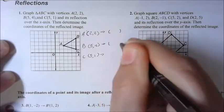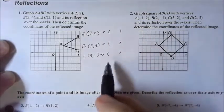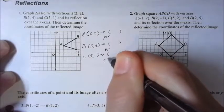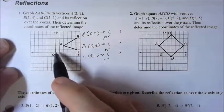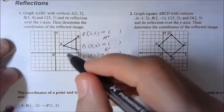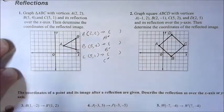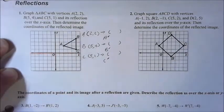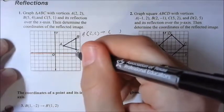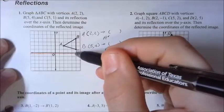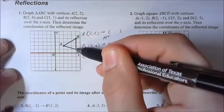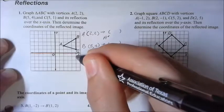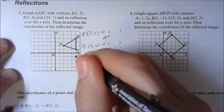Now we just have to write the new coordinates of the image. We could use the algebraic rule to get A prime, B prime, and C prime, but I think it's easier on this one to just use critical thinking. We're going to flip it over the X axis. When we talk about flipping over the X axis, I'm going to highlight it — we're going to flip it over this axis right here. What I would do is go to that axis and just see how far the point is from that axis. Here's the X axis and C is just one space away.